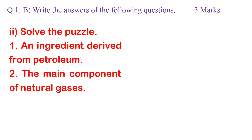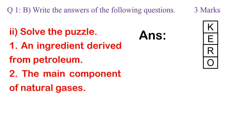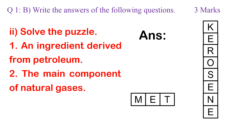Question 2: Solve the puzzle. 1. An ingredient derived from petroleum. 2. The main component of natural gases. Answer: 1. Kerosene. 2. Methane.